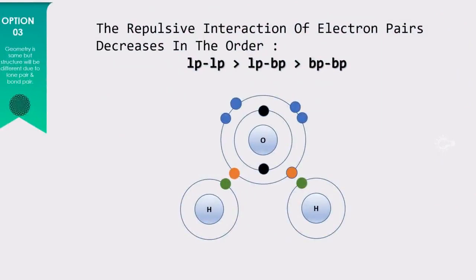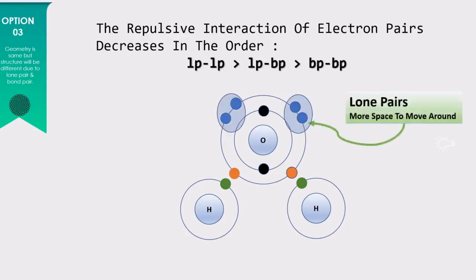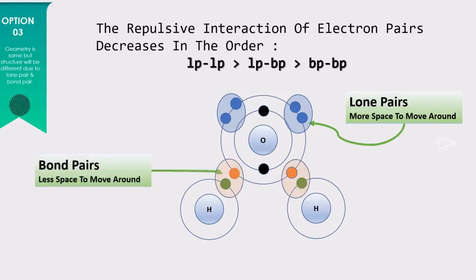Let's look at the third point. Although having the same geometry, two molecules can have different shapes due to lone pair and bond pair repulsion. Remember that the repulsive force between lone pair–lone pair is greater than lone pair–bond pair repulsive force. This is because lone pairs have more space to move around, so they can push each other away. But bond pairs are strongly bonded with the electrons of other atoms, so they don't have much space to move around.